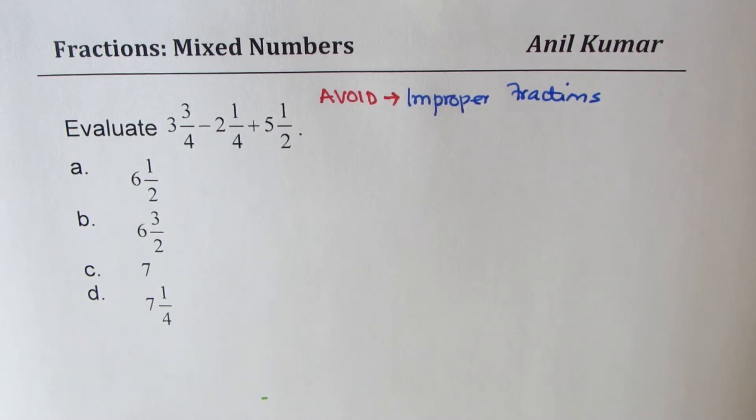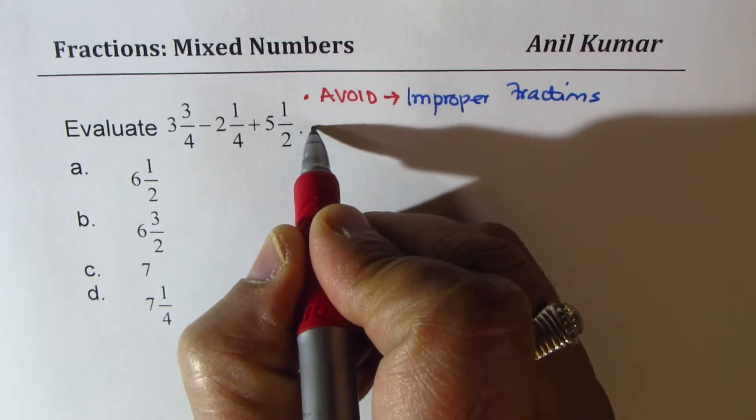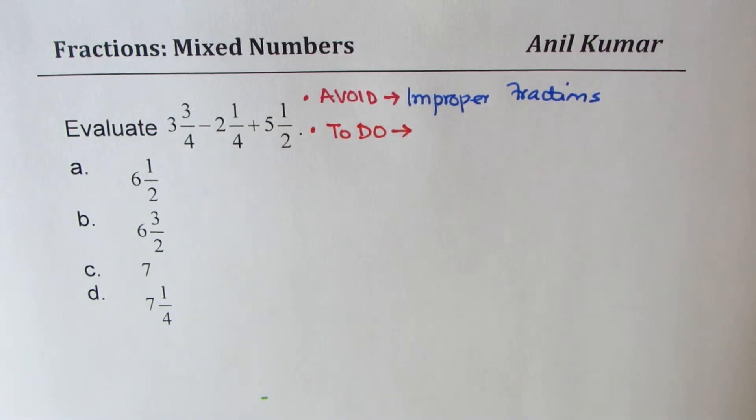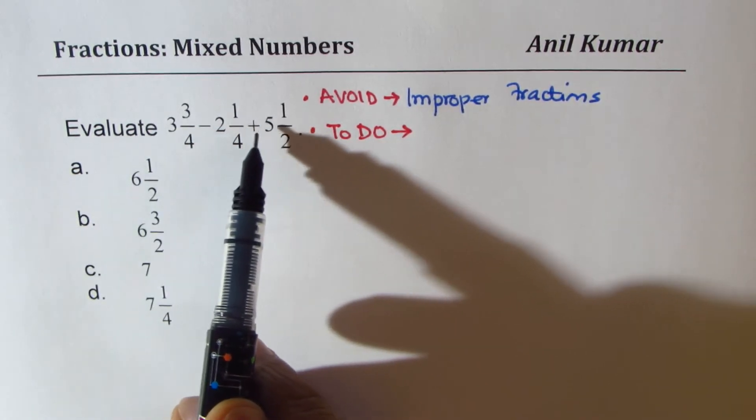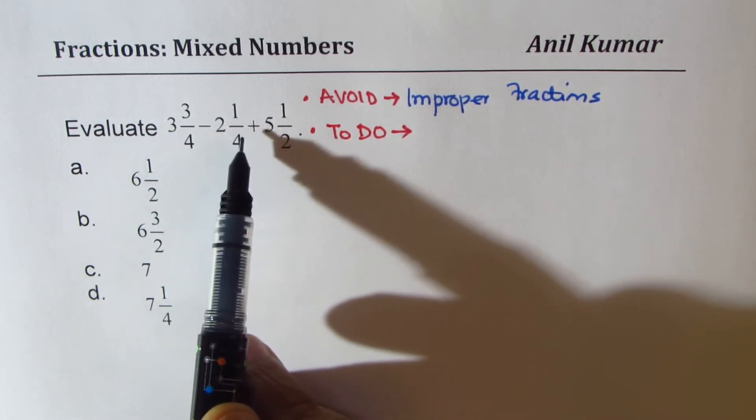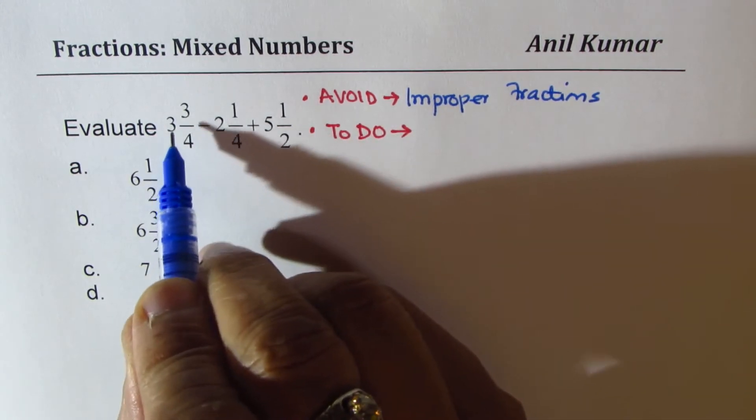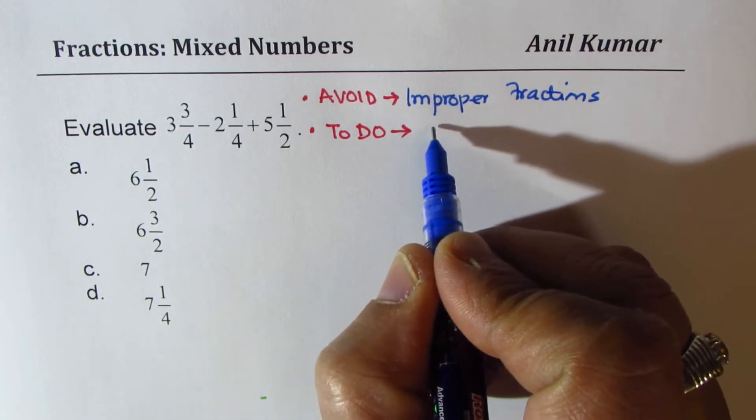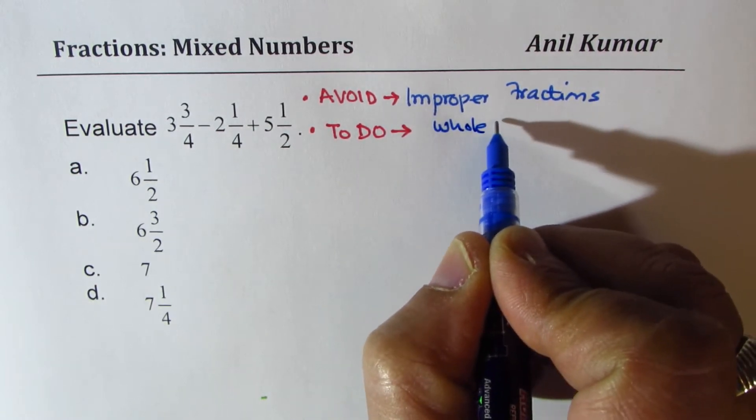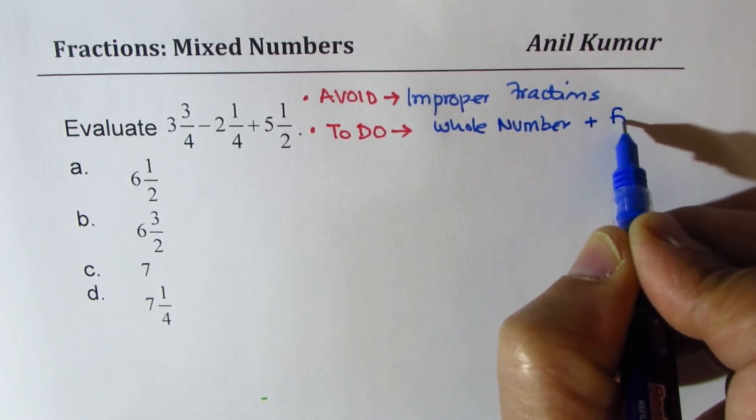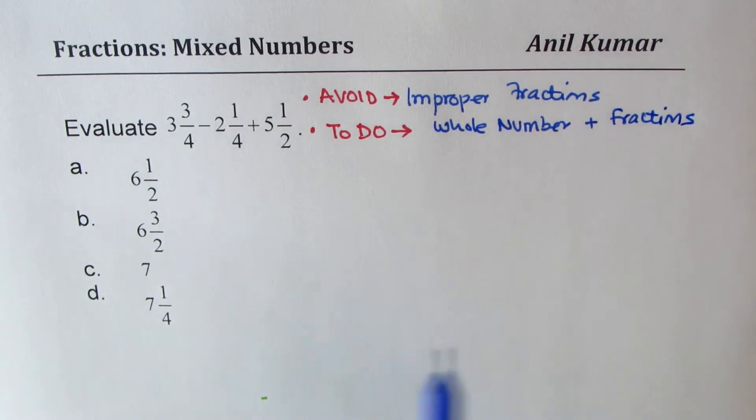So what you should do here is as follows. You need to write the whole numbers separate. So what we need to do is to separate fractions from the whole numbers. Do whole numbers plus fractions. Mixed numbers means we have mixed them up.